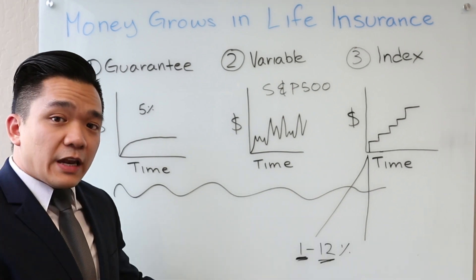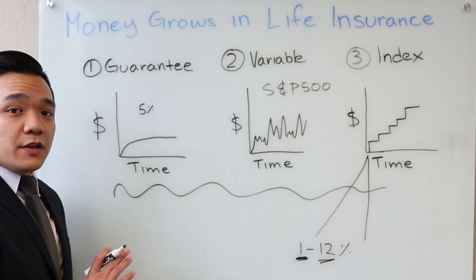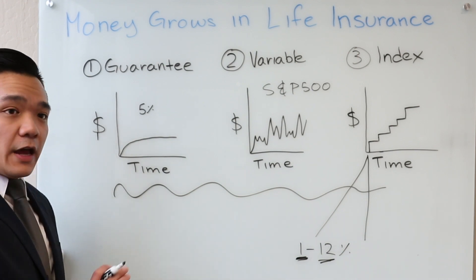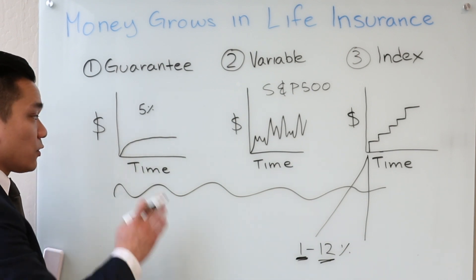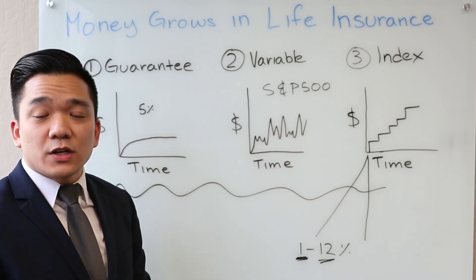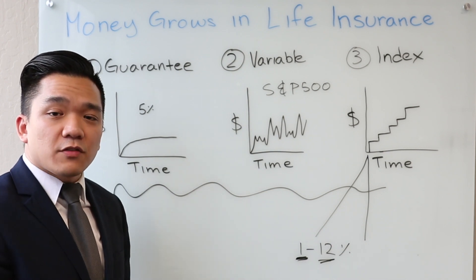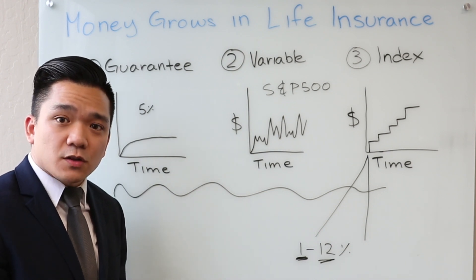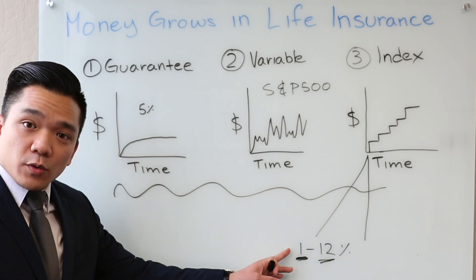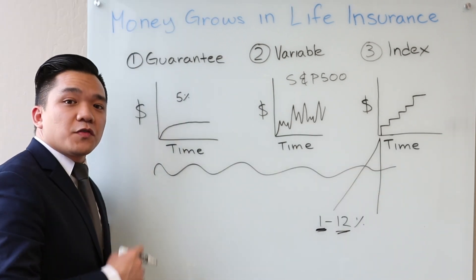You are within specific guidelines for your growth. You will never get anything less than 1% and you will never get anything more than 12%. This is typically the way that your money grows in life insurance. It can be either a guarantee, it can be a variable, it can be an index. Which one is best? It really depends on you. If you want a specific amount guaranteed to you every single year because you don't have a lot of confidence in the market, you want more than 1%, go with the guarantee because you know you're always going to get 5%.